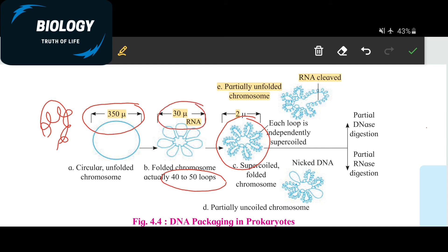After that, from these loops or folds, it gets super coiled, so the size is again reduced up to 2 microns. This 2-micron DNA can easily fit into the small nucleus. This coiled packaging is assisted by positively charged histone-like DNA binding protein, and enzymes like DNA gyrase and DNA topoisomerase, for maintaining the super coiled state.